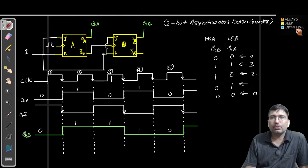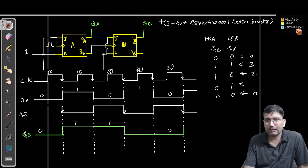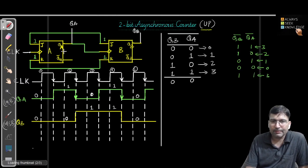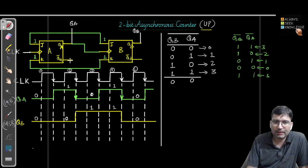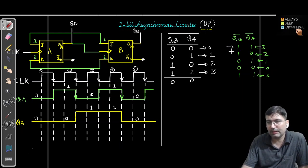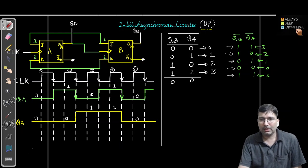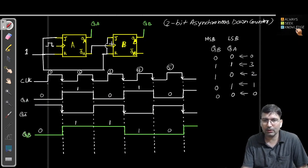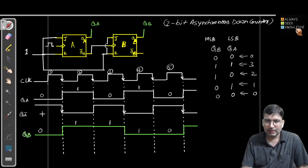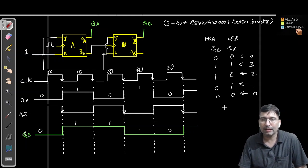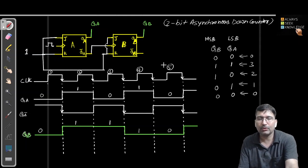To design down counters I have elaborated two ways. In the first way, rather than taking outputs as QA and QB, we consider the output pins as QA bar and QB bar — if we take the bar outputs we get 11, 10, 01, 00 and it works as a down counter: 3, 2, 1, 0. The second way is instead of connecting QA as the clock to the next flip-flop, we connect QA bar — once you connect QA bar it starts working as a down counter. This is the 2-bit down counter lecture. Thank you.